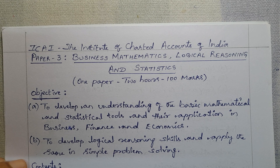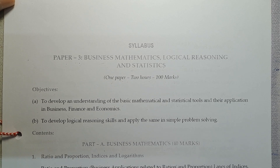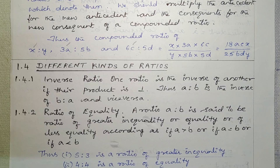Namaste. ICAI stands for the Institute of Chartered Accountants of India. Paper 3, Business Mathematics, Logical Reasoning and Statistics — 1 paper, 2 hours, 100 marks. Article No. 1.4: Different Kinds of Ratios.